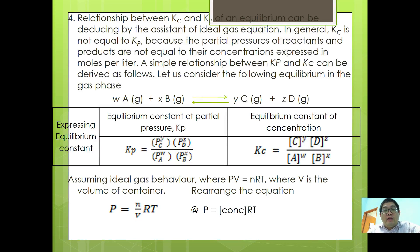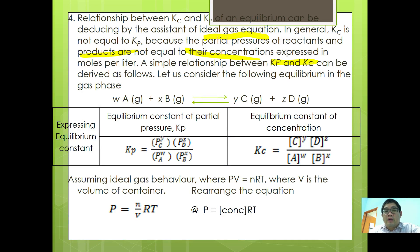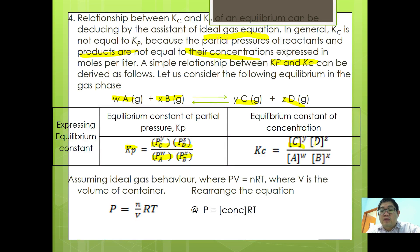We will look at the relationship between Kc and Kp, which can be derived using the ideal gas equation. In general, Kc ≠ Kp because partial pressures may not equal concentrations in mol/L. Consider the gaseous equilibrium: wA + xB ⇌ yC + zD. Kp is expressed as P_C^y · P_D^z over P_A^w · P_B^x, while Kc is [C]^y · [D]^z over [A]^w · [B]^x.